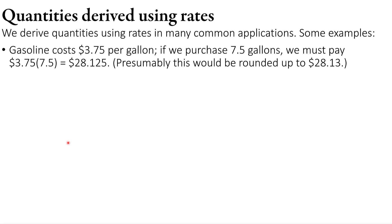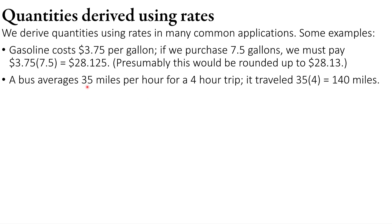For example, gasoline costs $3.75 per gallon. If we purchase 7.5 gallons, we multiply $3.75 per gallon times 7.5 gallons to get $28.125 — rounded to $28.13, of course. Here's another one: a bus averages 35 miles per hour for a four-hour trip. We multiply 35 miles per hour times 4 to get 140 miles.